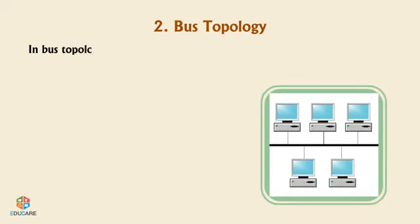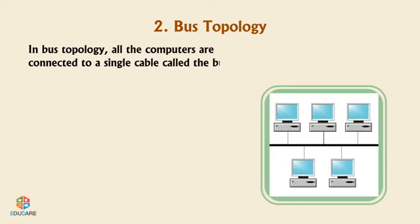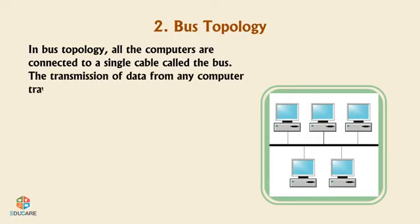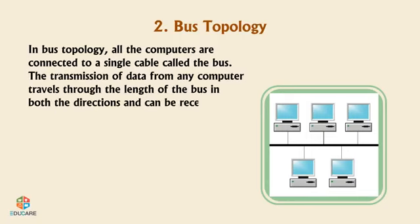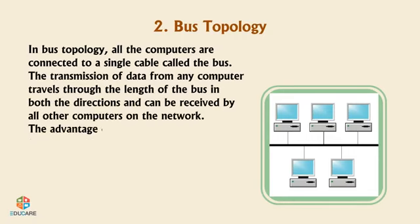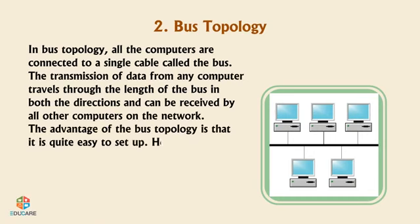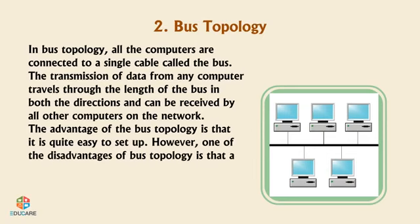Bus Topology: In bus topology, all the computers are connected to a single cable called the bus. The transmission of data from any computer travels through the length of the bus in both directions and can be received by all other computers on the network. The advantage is that it is easy to set up; however, the network cannot function if there are breaks in the main cable.